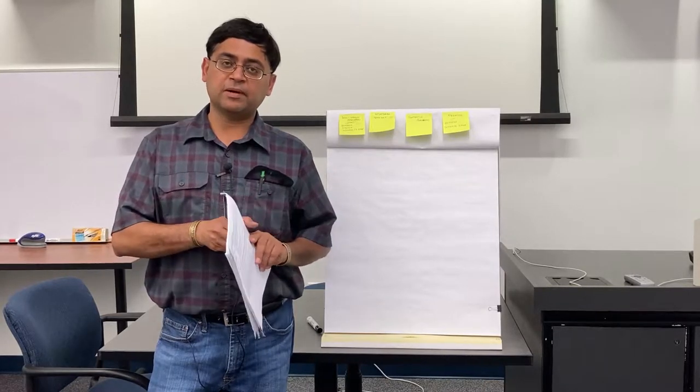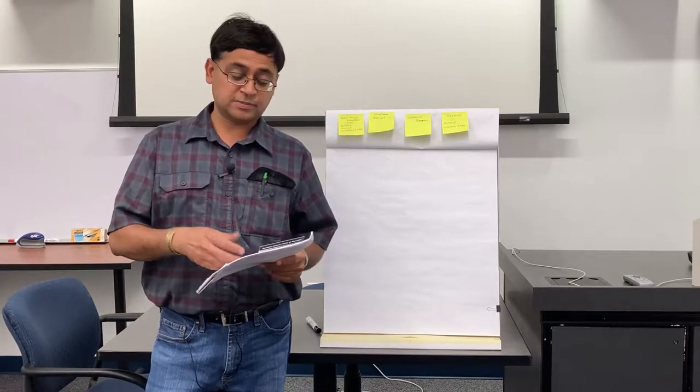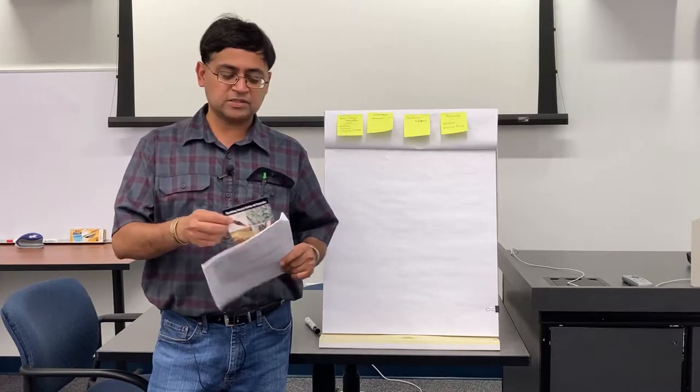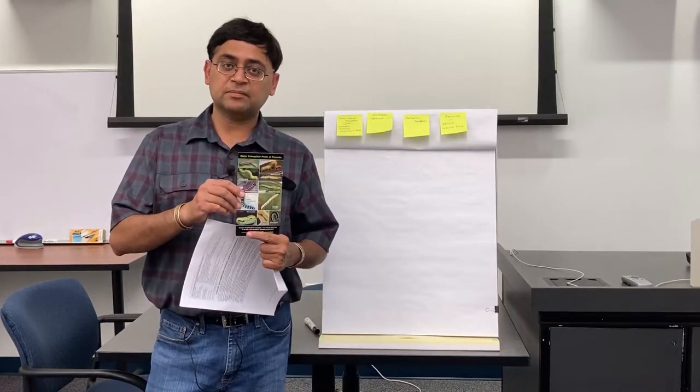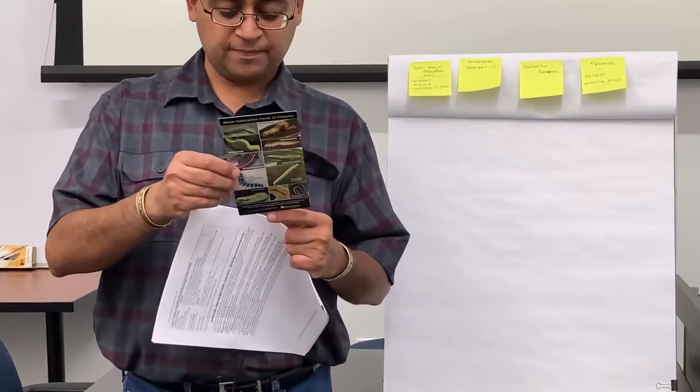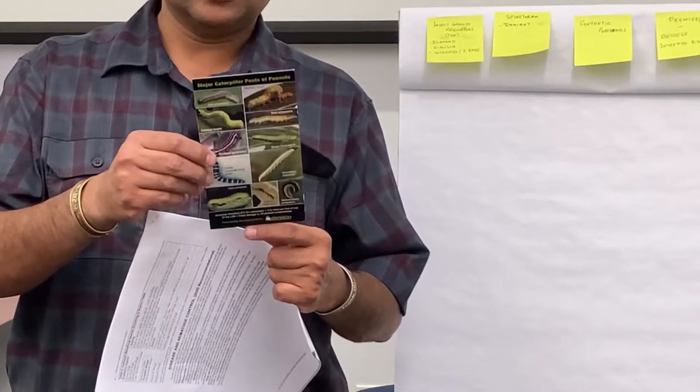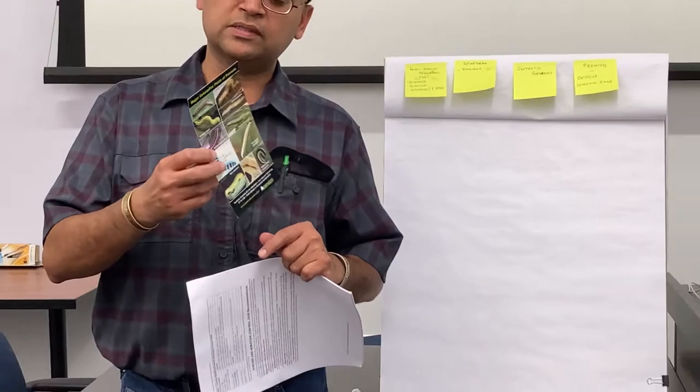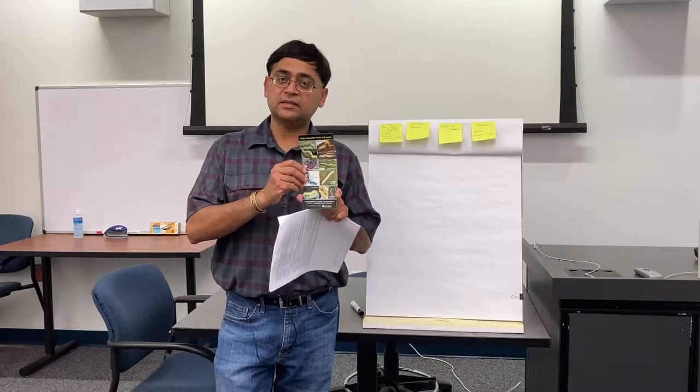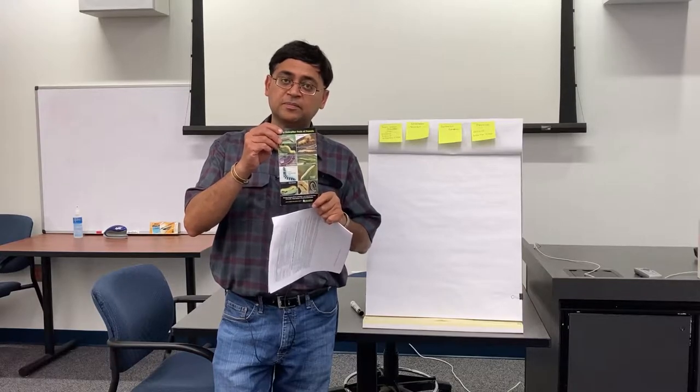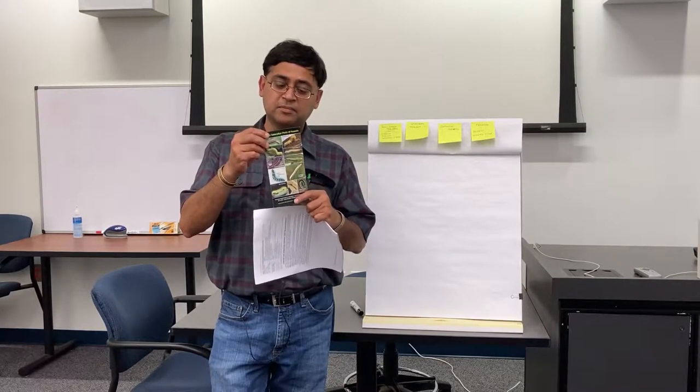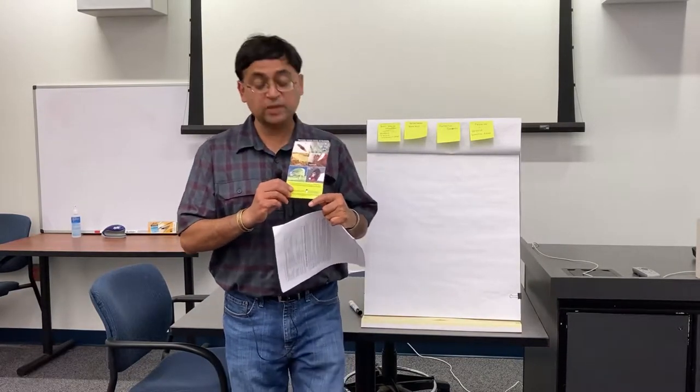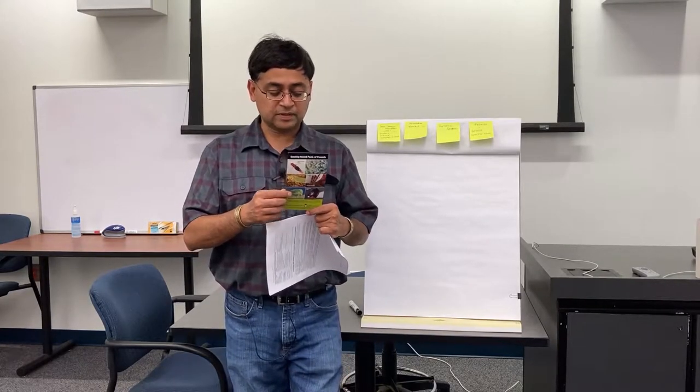I wanted to remind everybody about some publications that are very useful, especially now that we are not doing face-to-face meetings. These are digital publications. One is the Peanut IPM or Caterpillar publication, ANR 2396. You can look up ANR 2396 on aces.edu and download this. It's like a card with the caterpillars nicely pictured and described. On the other side are leafhoppers and other sucking insect pests, including burrower bugs, which have been a problem in peanuts.